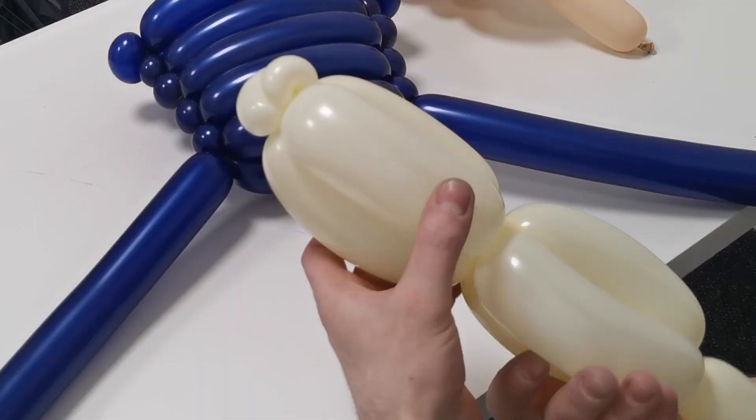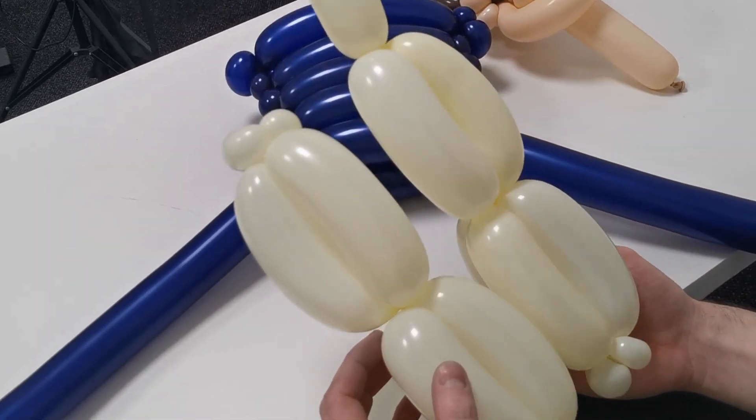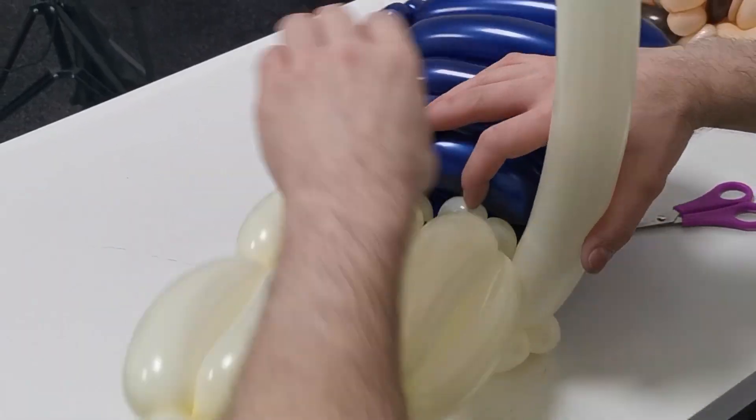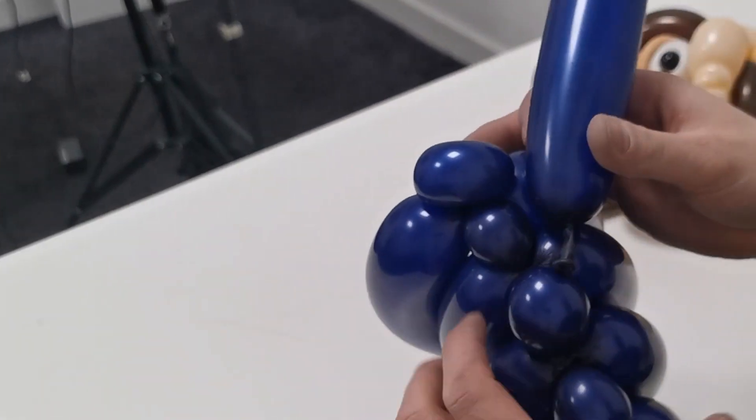And then we'll start working on the trousers or pants as y'all like to call them in America. So two trouser legs. Stick them on and we'll wrap it around to sort of finish it off nicely.